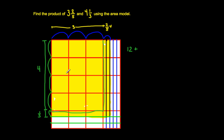Then I put that together with 4 times 2 fifths. 4 times 2 fifths will be 8 fifths. And with 8 fifths, I know 5 fifths make a whole. Counting: 1 fifth, 2 fifths, 3 fifths, 4 fifths, 5 fifths, 6 fifths, 7 fifths, 8 fifths. Since 5 fifths make 1 whole, I have 1 whole plus 3 fifths remaining. So 8 fifths equals 1 and 3 fifths.